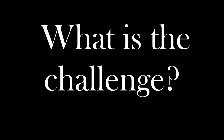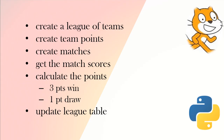Your challenge is to create a league of teams, where these teams have points. You create matches and get the match scores from the user — the person will enter the match scores. For each match you need to calculate the points awarded: if the team wins they get three points, if they draw they get one point, and if they lose they don't get any points. Once you've calculated the match points, update those points in the league table.